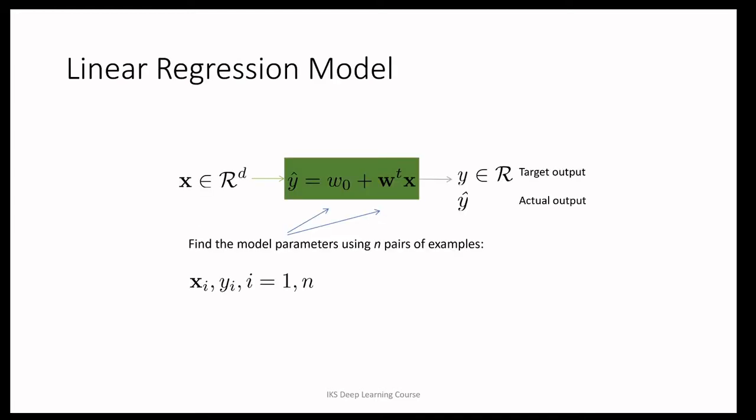Let's start with a model that we call a linear regression model. In this model, we assume that we are given a collection of d-dimensional vectors — we call them training examples. Associated with every vector is a number y, which is what we call the target output or desired output. The model takes the form y-hat equal to w0 plus w-transpose x, where y-hat is the output that our model produces in response to the input vector x.